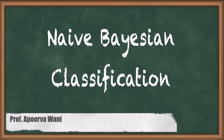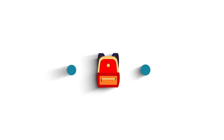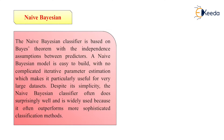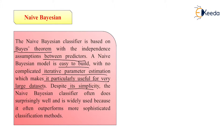Hello friends. In this video we are going to see a very important classifier — Naive Bayes — which is very useful to perform classification. The Naive Bayes classifier is based on the Bayes theorem with the independent assumption between the predictors. A Naive Bayes model is easy to build with no complicated interactive parameter estimation, which makes it particularly useful for very large datasets. Despite its simplicity, the Naive Bayes classifier often performs surprisingly well and is widely used because it often outperforms more sophisticated classification methods.